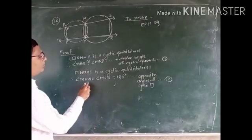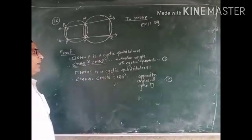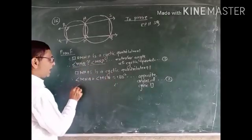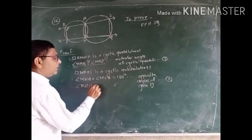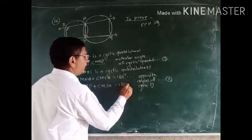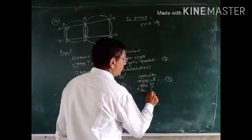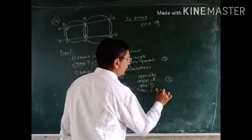Now we will substitute, instead of angle MNQ, its equivalent value angle MRP. Therefore, angle MRP plus angle MSQ equals 180 from equations 1 and 2.